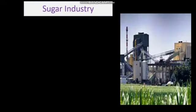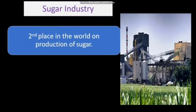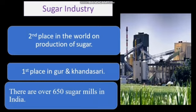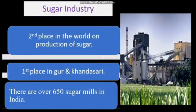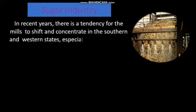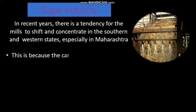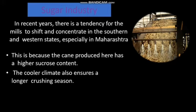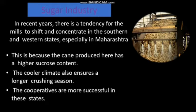India stands second as a producer of sugar and occupies first place in the production of Gur and Khansari. There are over 650 sugar mills in India. In recent years there is a tendency for mills to shift and concentrate in the southern and western states, especially in Maharashtra, because the cane produced there has a higher sucrose content — meaning more sugar can be produced. The cooler climate also ensures a longer crushing season, and cooperatives are more successful in these states.